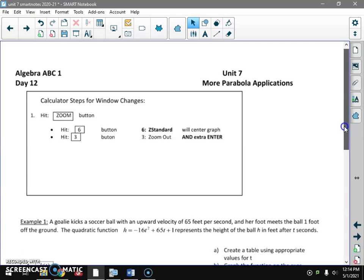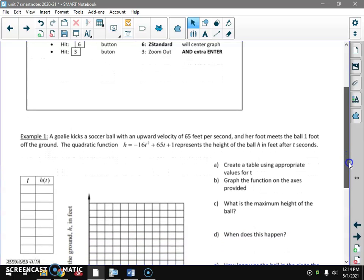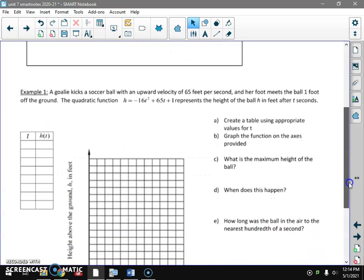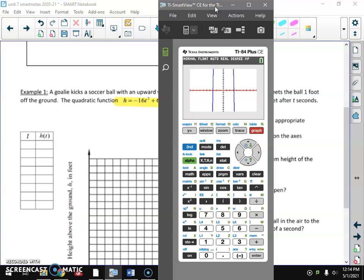The first one we're going to start with is a soccer goalie kicking a ball straight up in the air and then it coming back to the ground. She kicks it with an upward velocity of 65 feet per second, her foot meets the ball a foot off the ground, but most importantly is this equation we're going to put into y equals. Go to our calculator, y equals, clear out some stuff that we may have had.